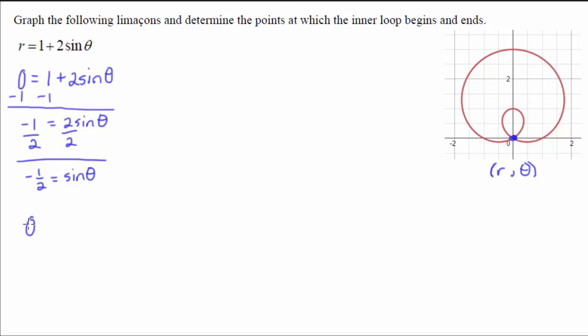Which means theta equals 7 pi over 6 and 11 pi over 6. And so all we're going to do is we're going to write these as points now, r comma theta. So that's the theta part of our points.